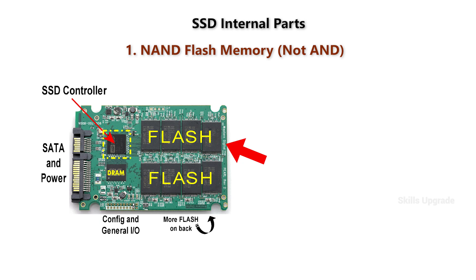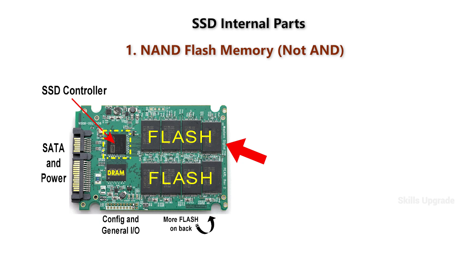First one is NAND Flash Memory. NAND means NOT AND. This is a non-volatile flash memory.